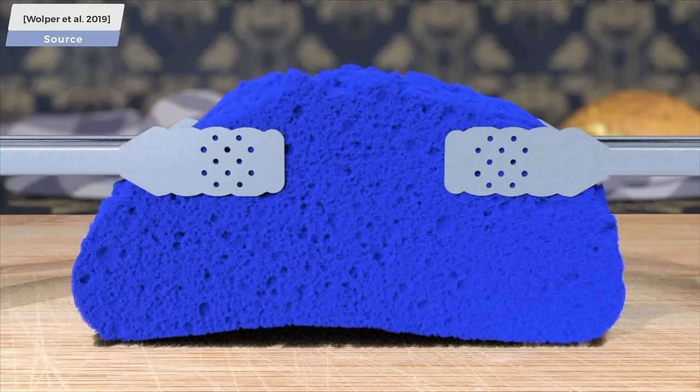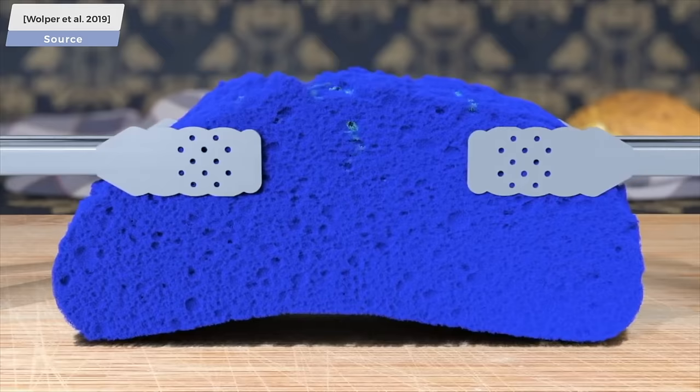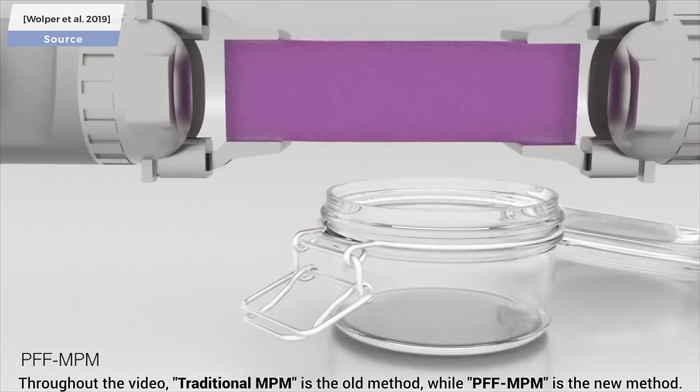With this method, we could smash Oreos, candy crabs, pumpkins, and much more. It even supported tearing this bread apart. This already looks quite convincing, and in this series, I always say, two more papers down the line and it will be improved significantly.